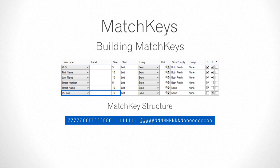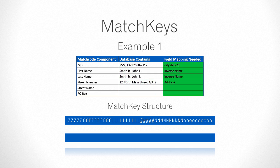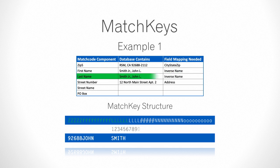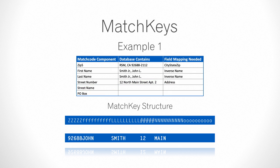Now the easiest way to get this is with examples. So let's go on to example number one. In the first column we have our match code component, in the second column the example contact, and in the third column the type of field mapping needed for the match key. We pull out the first five characters from zip 5, then the only four characters from first name, then the only five characters from last name, two characters from street number, four characters from street name, and no characters from P.O. Box. This is our match key for example one, including the spaces.